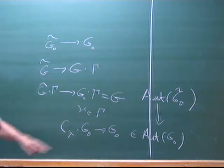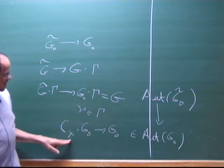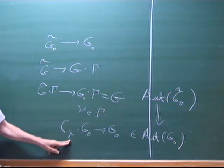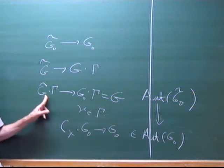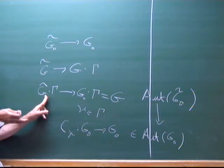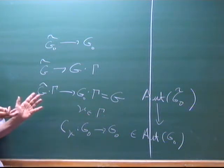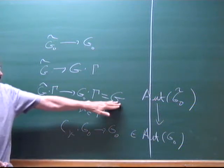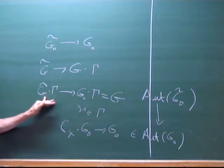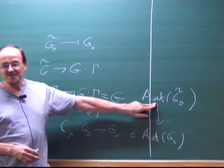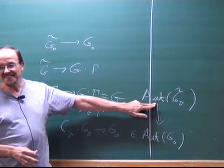And even if it does lift — say I have an element of order two, so it's an automorphism of order two — if it lifts, it may have order four upstairs. The square could be in the kernel of the covering, so then the group upstairs is going to be different. So this might have two components and this might have four components. I mean, I can even lift it as an automorphism, and then you're stuck.